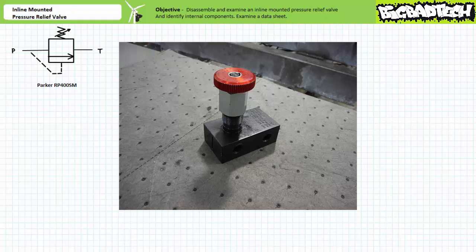Today's lecture is a chance to disassemble and examine an actual pilot operated pressure relief valve and identify those components that make it function, all without getting your hands dirty. Additionally, we'll interpret pertinent data entries on a data sheet. The particular pilot operated pressure relief valve we'll be looking at today is a Parker RP400SM.